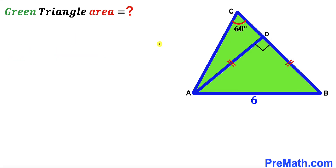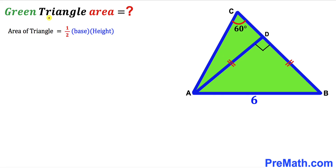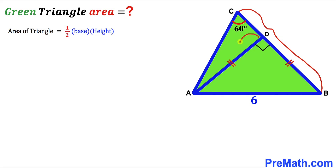Let's get started. Since we are interested in calculating the area of the green shaded triangle ABC, let's recall the area of a triangle formula: area equals one-half times base times height. Here, side BC is the base and AD is the height of the green shaded triangle.